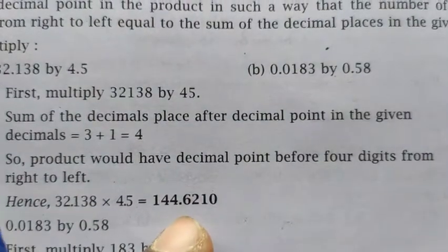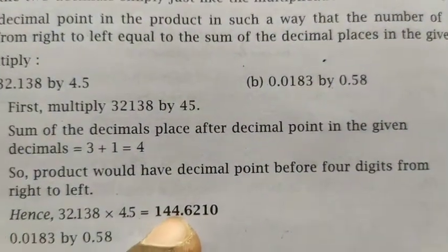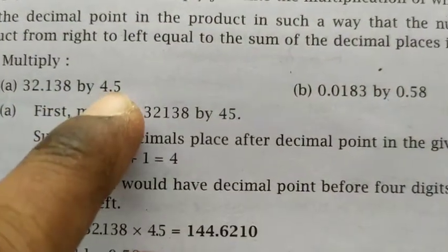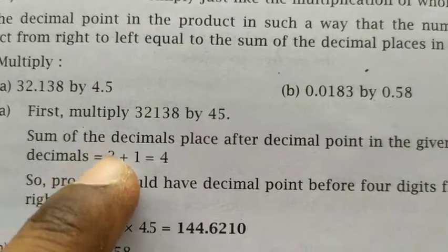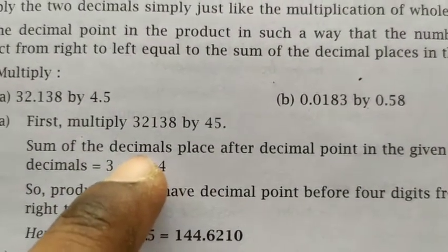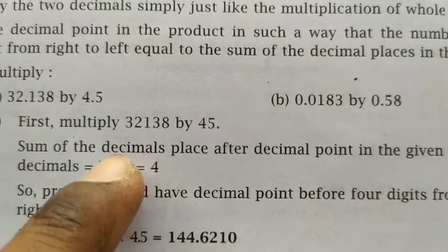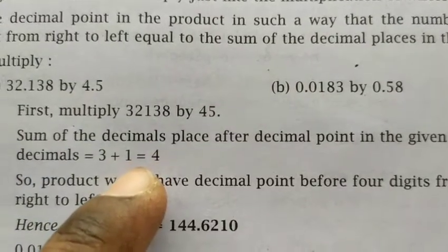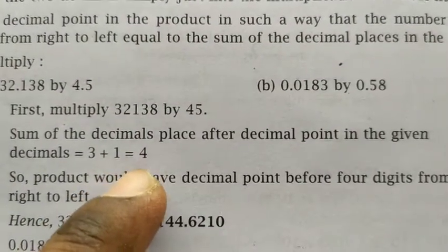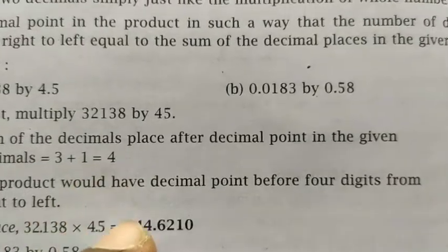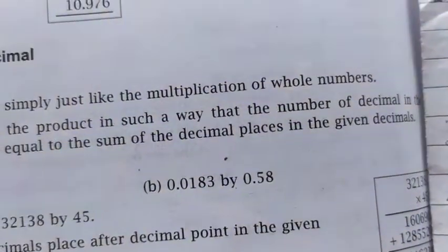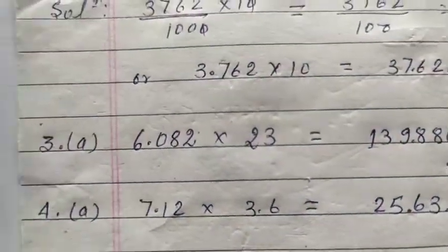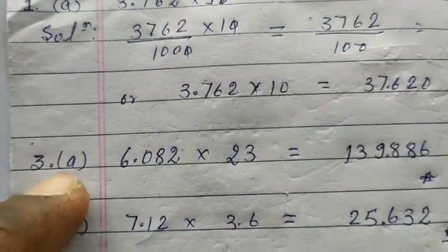When you get the product, remember that in the first number the decimal was before three digits, and in the second it was before one digit. The total number of decimal places is three plus one equals four. So you place the decimal in the product four places from the right. You can practice this with the questions in exercise — question number two can be done like question one, so we'll proceed to question number three.